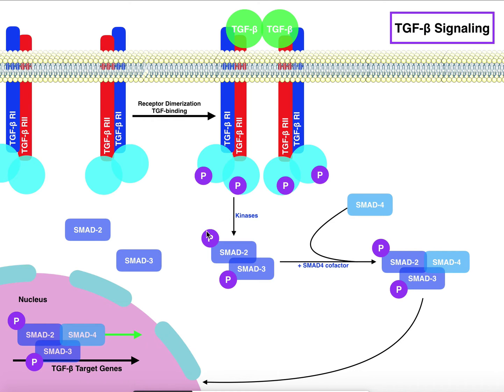However, whenever these kinase domains become active upon TGF-beta binding, these kinases actually phosphorylate SMAD2 and 3. SMAD2 and 3 become phosphorylated and they actually form a heterodimer. Notice they're actually dimerized right here. It's a heterodimer because they're technically different proteins. One's a class 2 SMAD, one's a class 3.